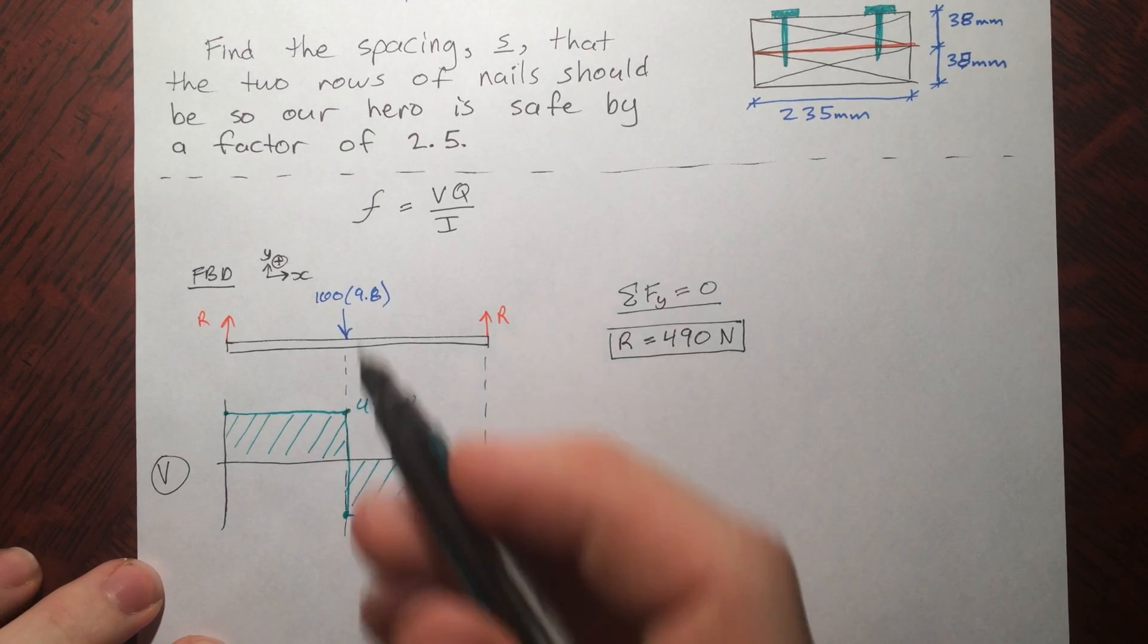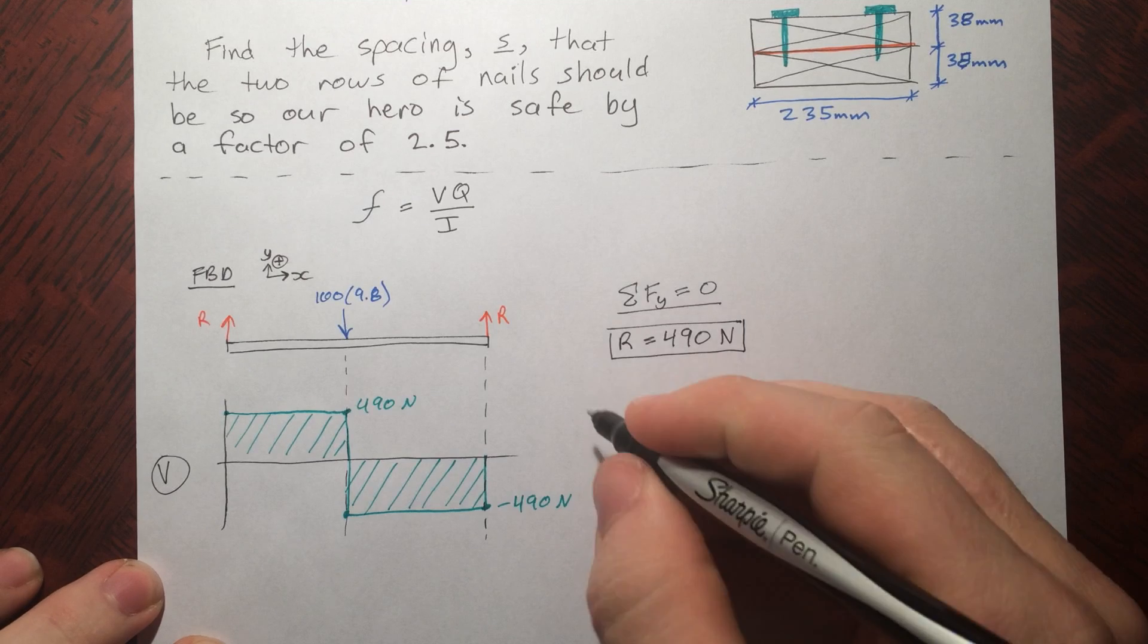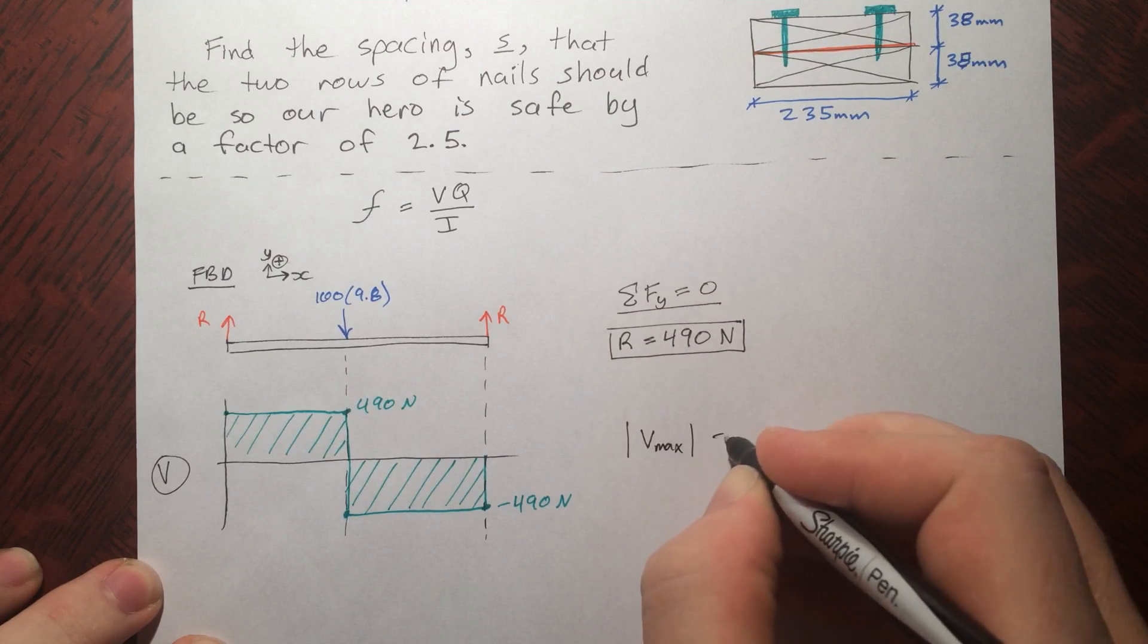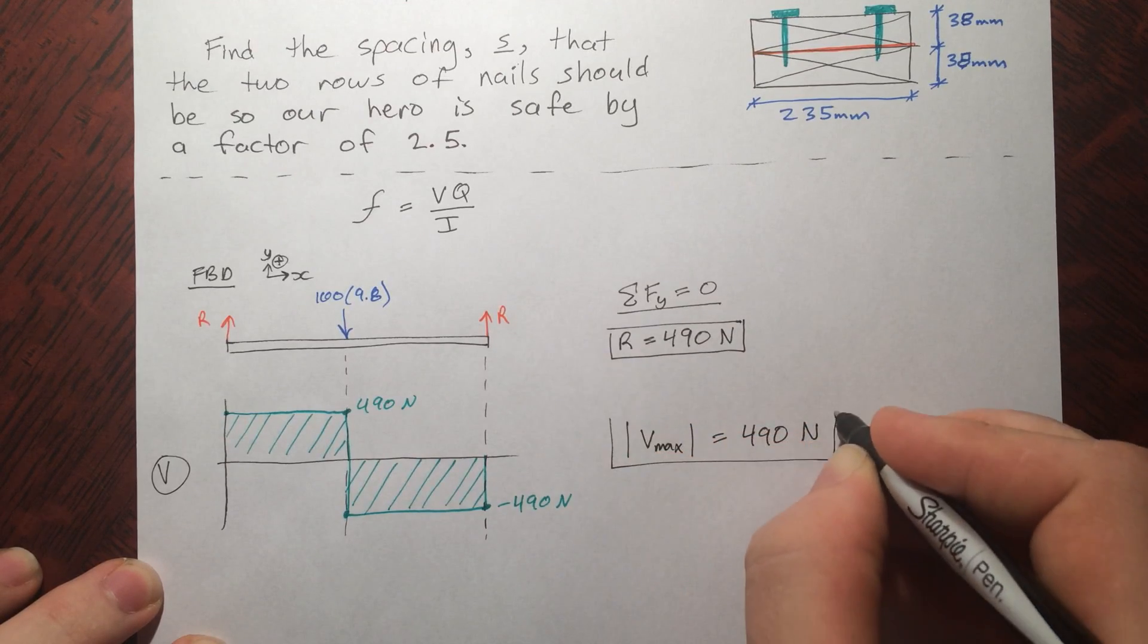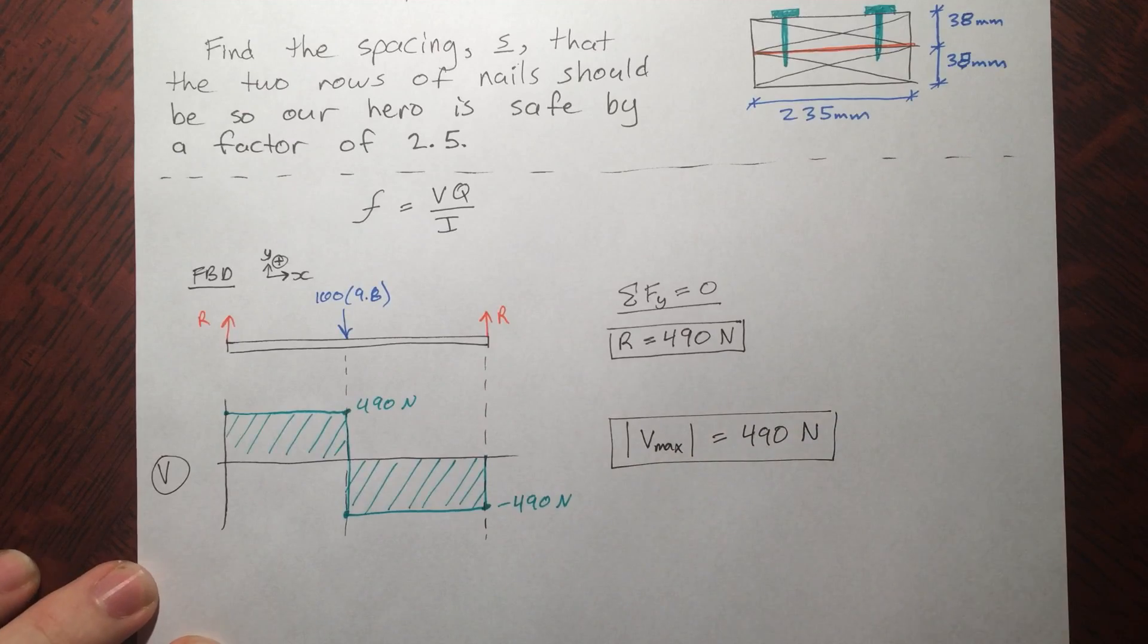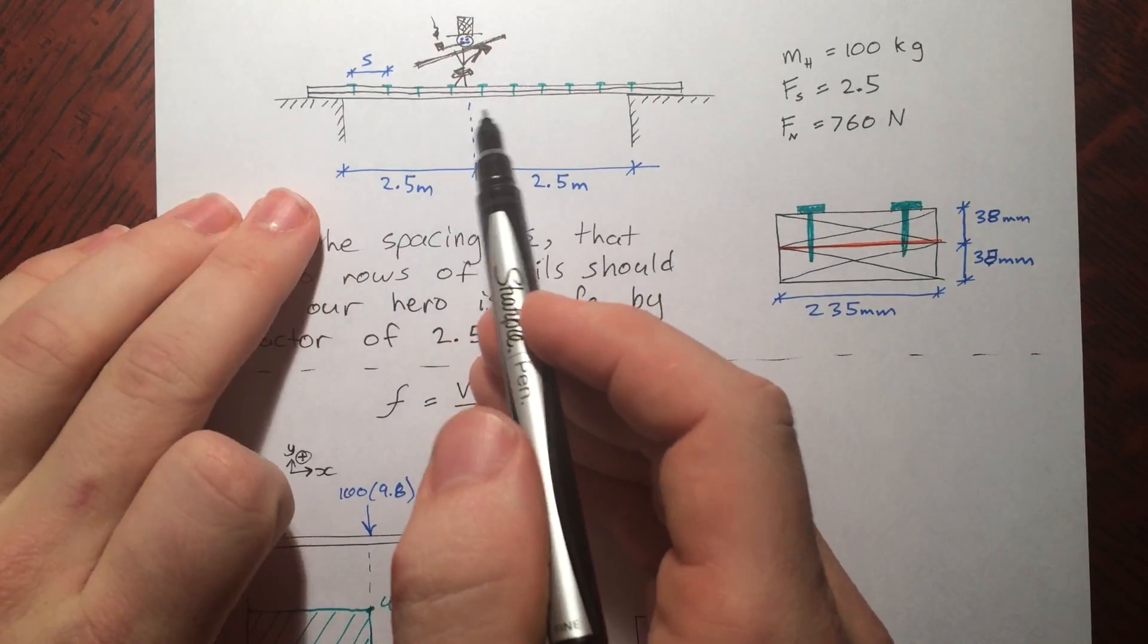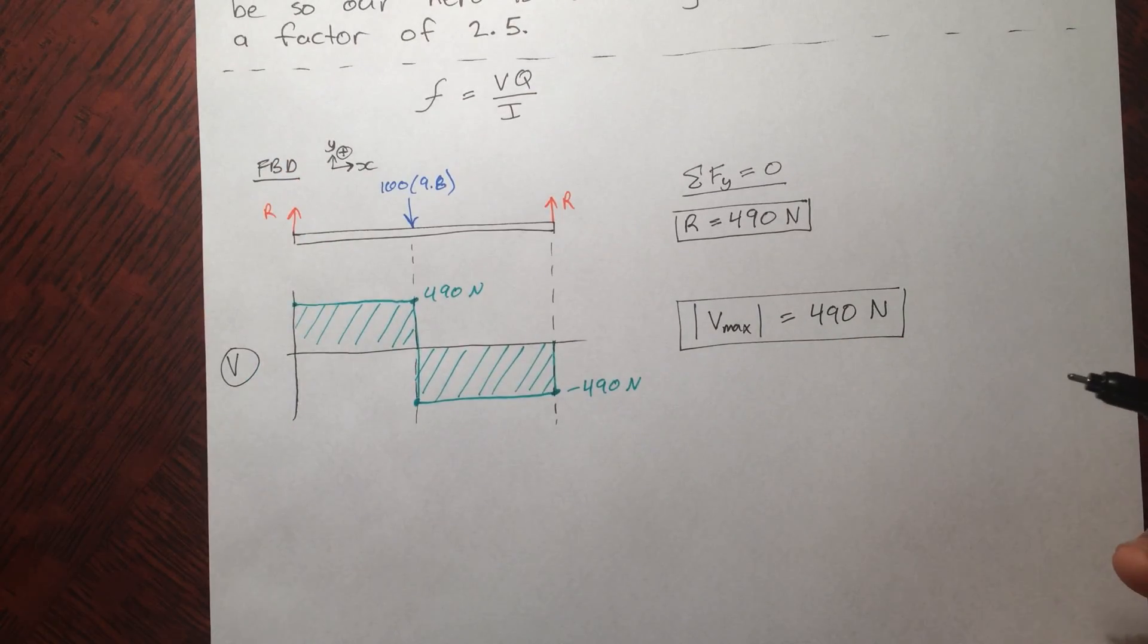There we go. So, for the sake of this, the shear in this, the magnitude of the shear is constant. So, we can write that. So, that's the number we're going to use in our equation. Because the spacing of the nails here will be the same as it is here, even though the shear force is negative. That only makes sense.